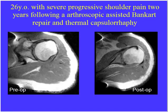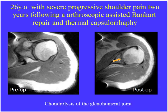A 26-year-old with progressive shoulder pain following arthroscopic Bankart repair and thermal capsulorrhaphy. Preoperative study shows normal articular cartilage and normal subchondral marrow. Two years later with persistent pain and decreased range of motion, we see complete loss of articular cartilage and subchondral marrow signal changes — severe osteoarthritis. This is severe chondrolysis of the glenohumeral joint following thermal capsulorrhaphy.